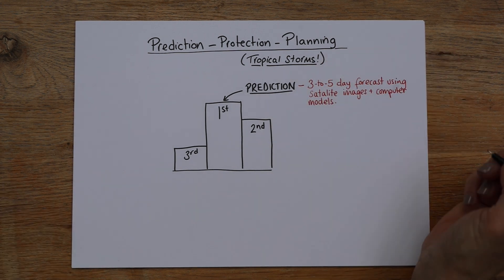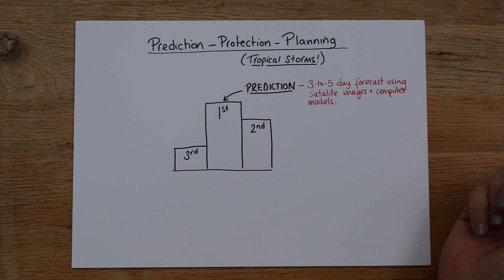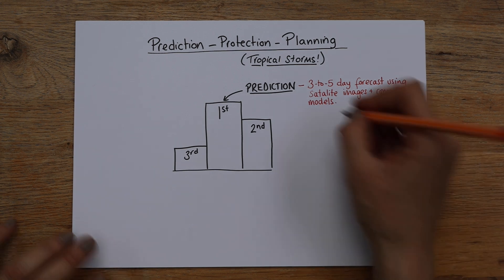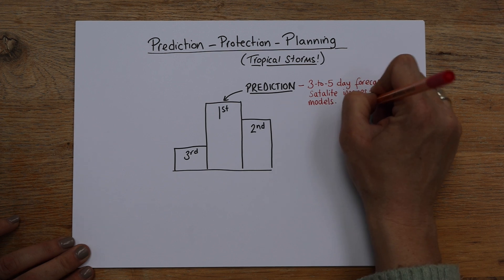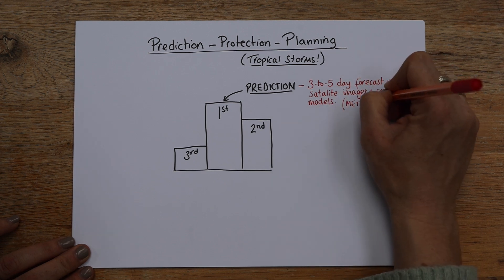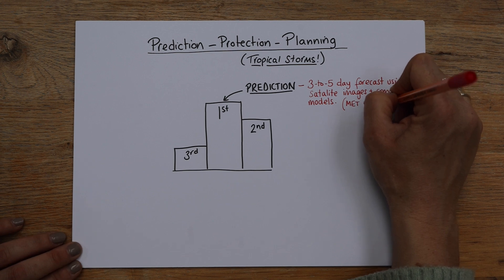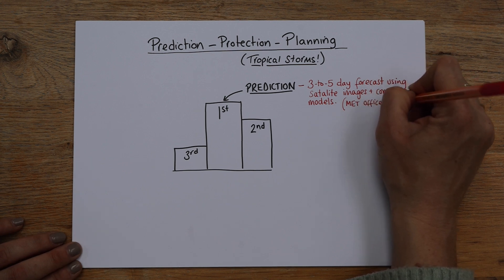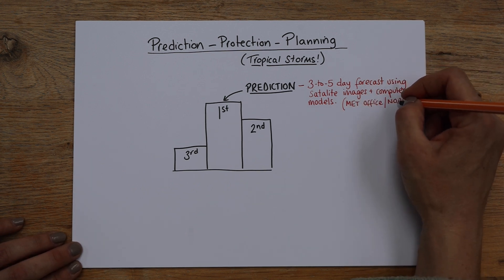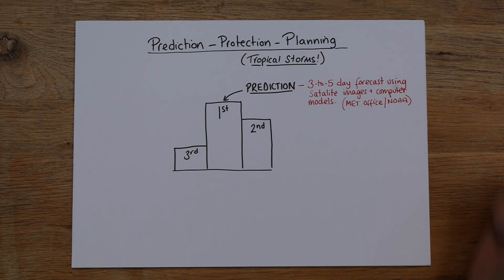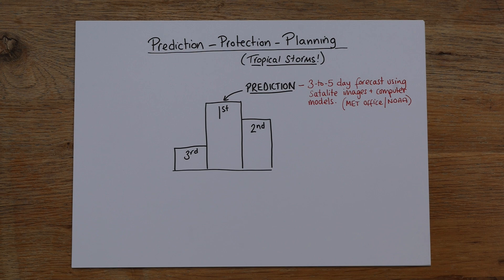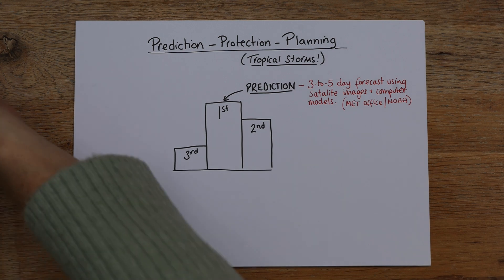So a three to five day forecast using satellite images and computer models. There's a lot of things you can't predict. Earthquakes, very hard to predict. Volcanoes, similarly. But tropical storms, you know, they can do it. And the one you want to look at is the Met Office. They have a really good model. And the other one is NOAA, which is the National Oceanic Atmospheric Administration, which is a bit of a mouthful. So yeah, they're great. It gives people a chance to escape.